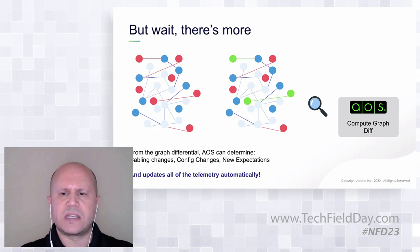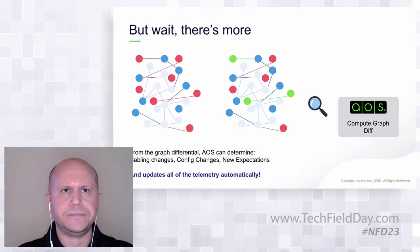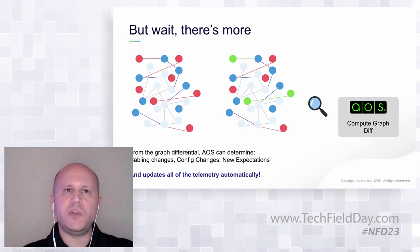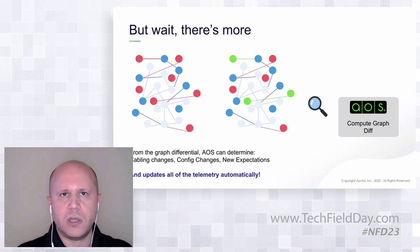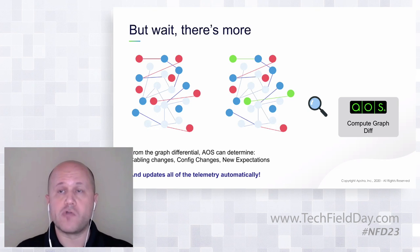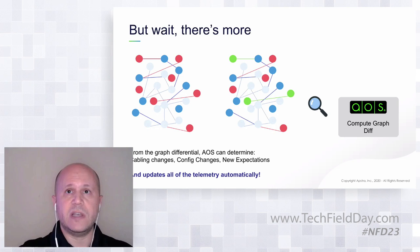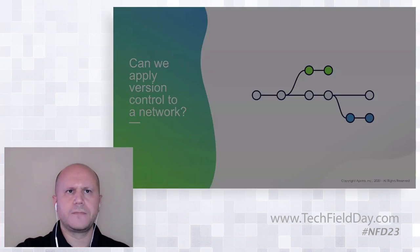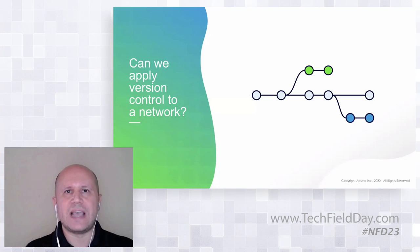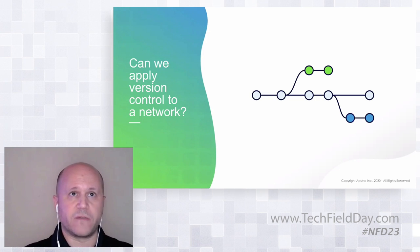Basically, for everything that AOS can do to the network, it will expect something to happen. These expectations are automatically created within the graph. So you can be sure when you create something like a new network, that AOS will verify that the network is up and reachable for all devices that should be able to reach it. There's a lot more to this validation which has already been covered in great detail.